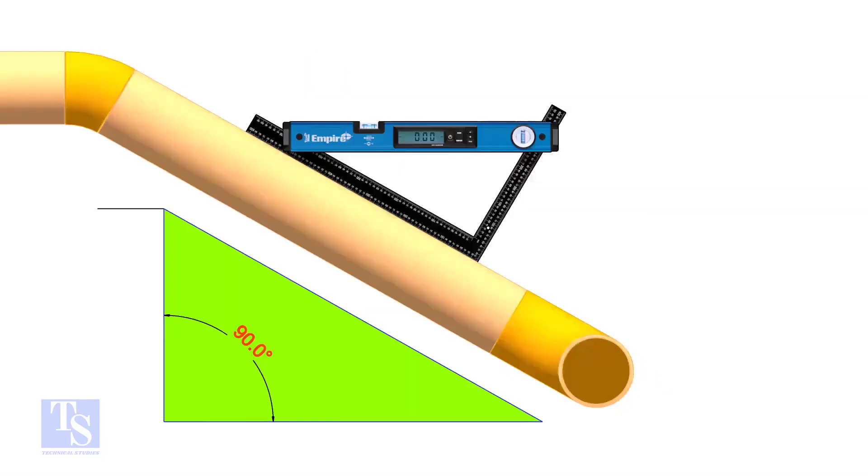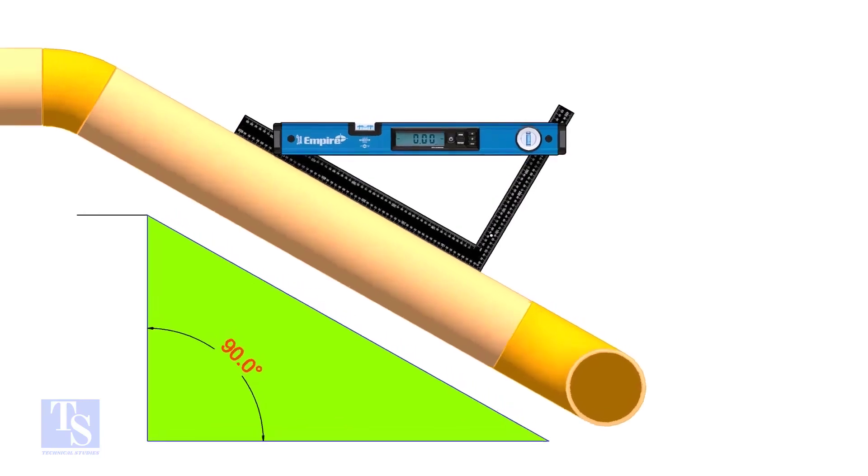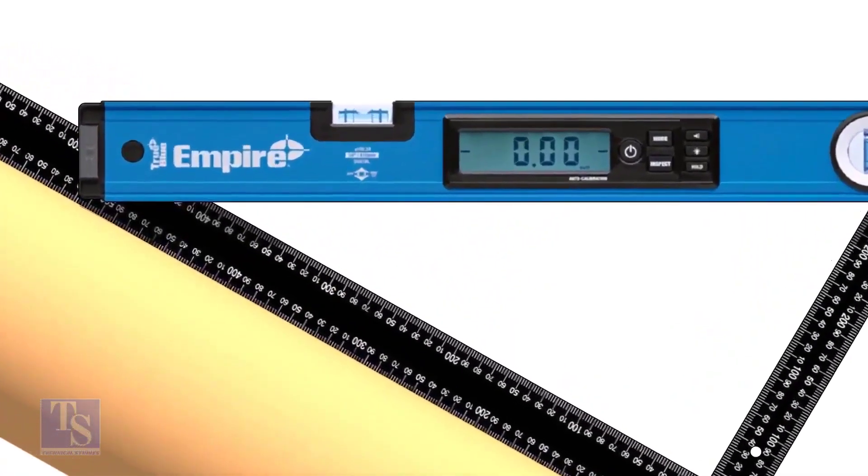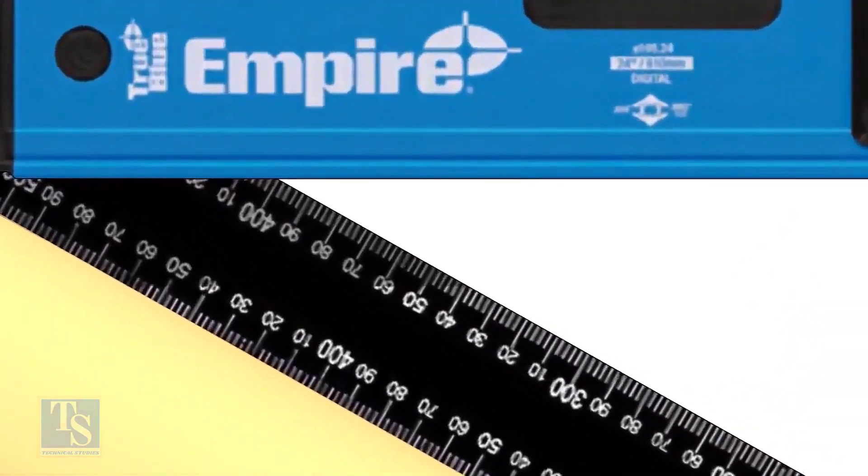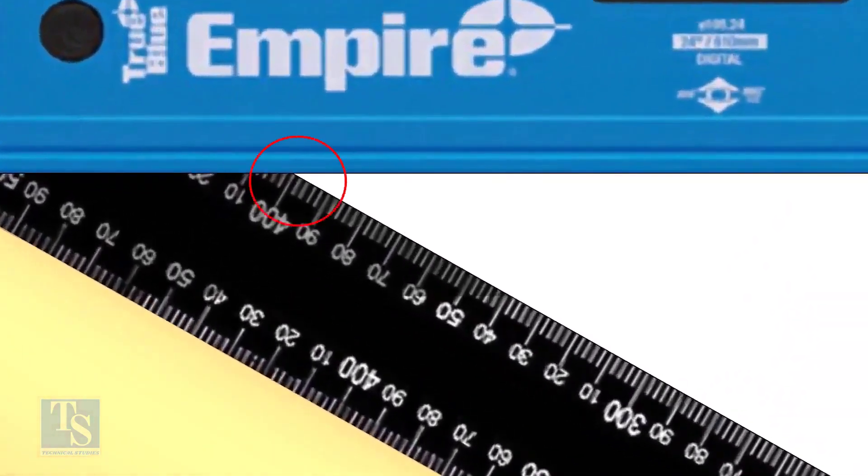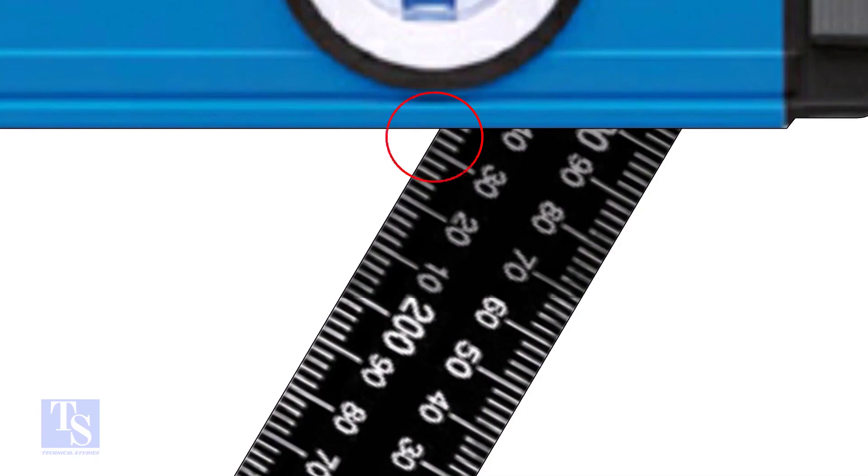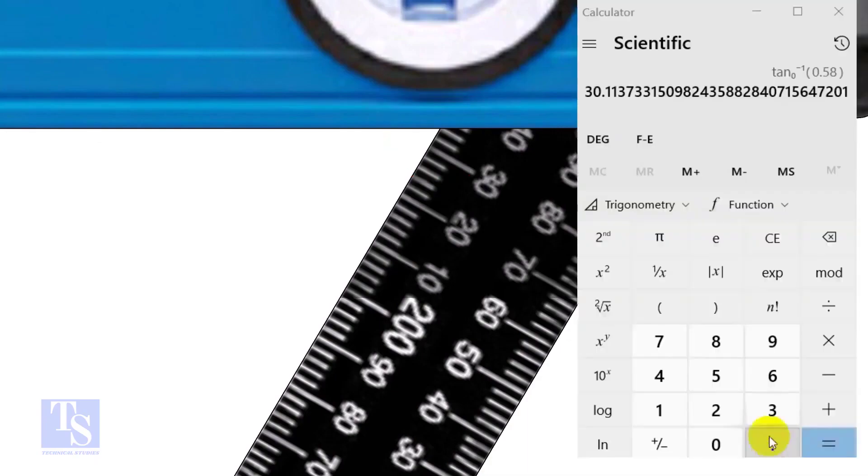Let us try another example. In this case, the run is 400 millimeters and the set is 232 millimeters.